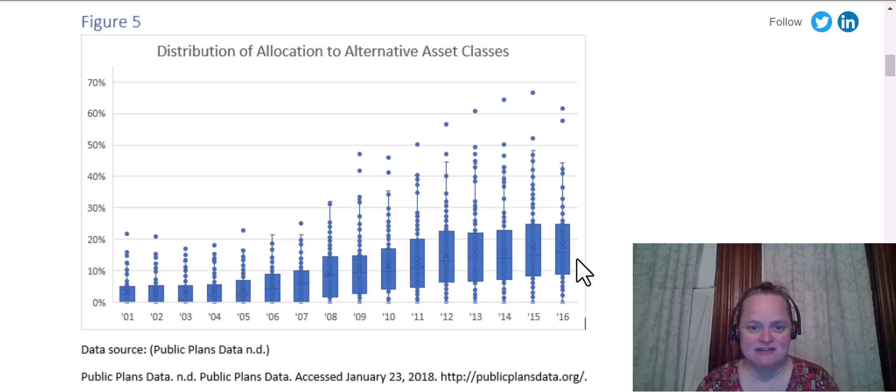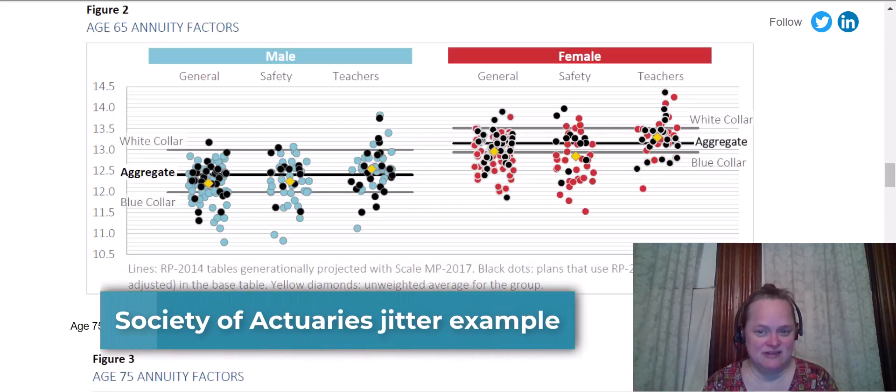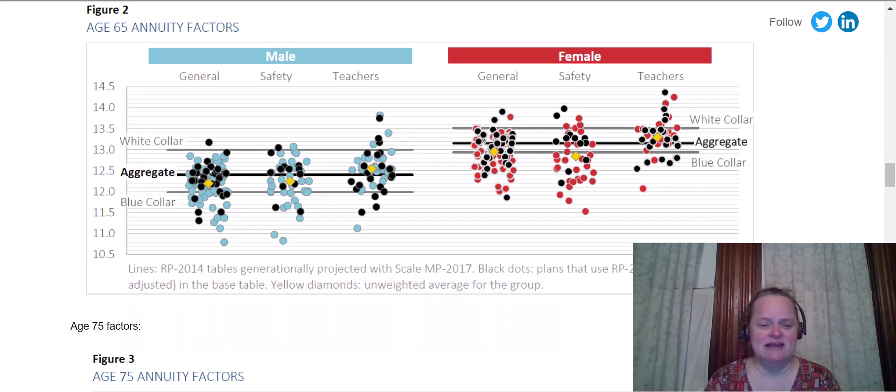And so finally, here is my revelation, and it came from a Society of Actuaries report. This is something else entirely. No boxes. This is not a box plot. It's all of the data points. Each point is on this vertical axis of these annuity factors. So this is plotting something else entirely. And each data point is plotted. Now they're overlapping, so you can't see all the dots. Fair enough.